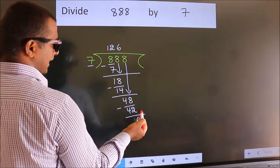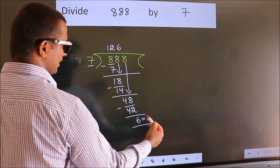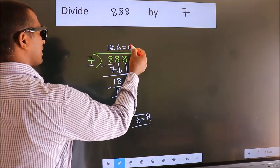No more numbers to bring it down. So we stop here. This is our remainder. This is our quotient.